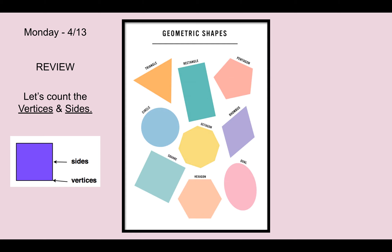Let's review the rest of our shapes. When we look here, we are looking at a triangle. If we are counting the sides first, we can count one side, two, and three. Let's count the vertices: one, two, and three.